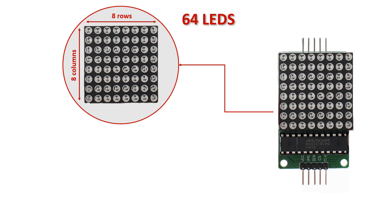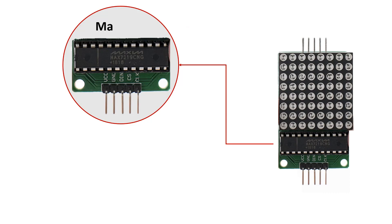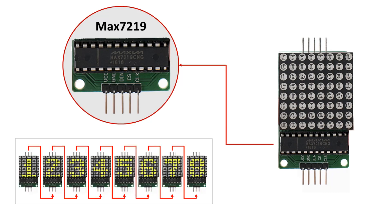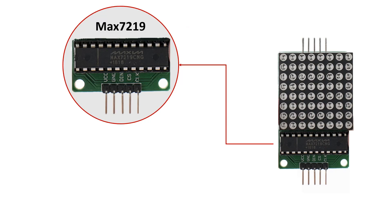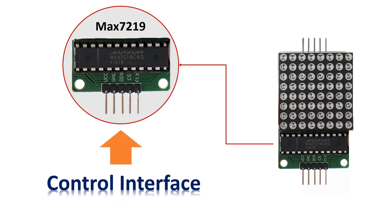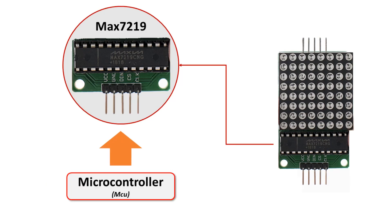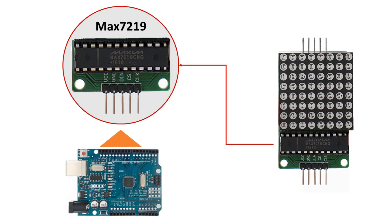An integrated circuit with reference MAX-7219, which has the capacity to control up to 8 LED matrices with a size of 8x8, and which provides a control interface for the LED matrix that can be used by a microcontroller — in this case, an Arduino Uno compatible board.